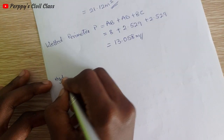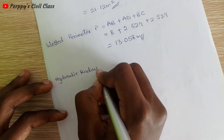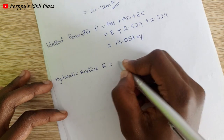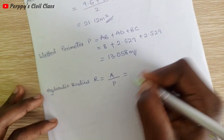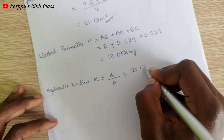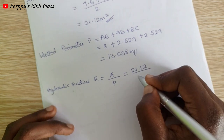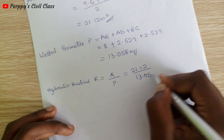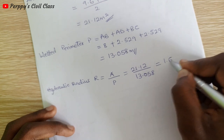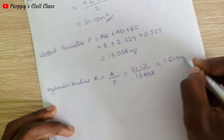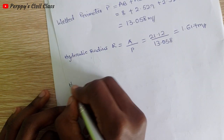Now we calculate the hydraulic radius R, which is the area of flow divided by the wetted perimeter. R = 21.12 / 13.058 = 1.617 meters. So the hydraulic radius is 1.617 meters.